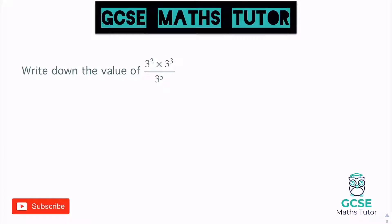So it's a bit of a special one. It says: write down the value of three squared times three cubed, all over three to the power of five. Let's just have a look at what we get here. So if we tidy up the top, adding the powers, we get three to the power of five on the top. And that's also being divided then by three to the power of five on the bottom. Now it says write down the value.